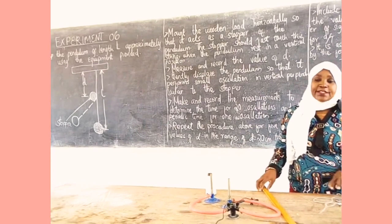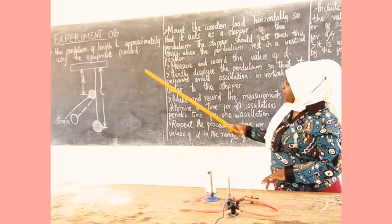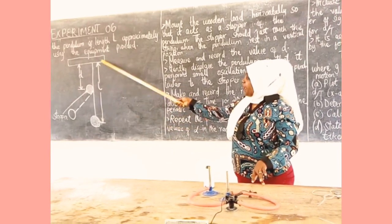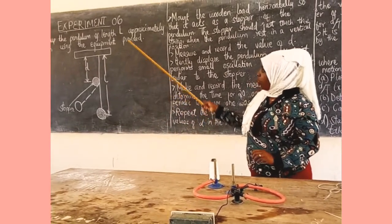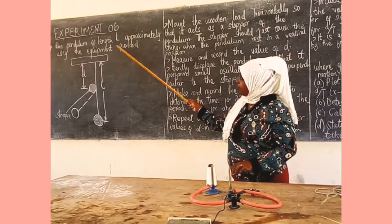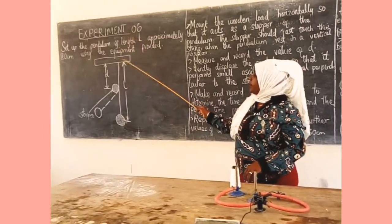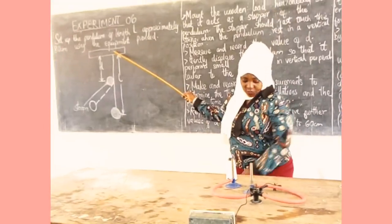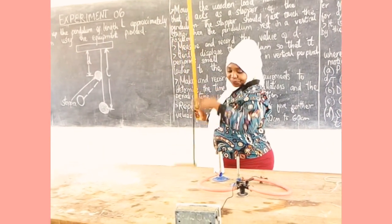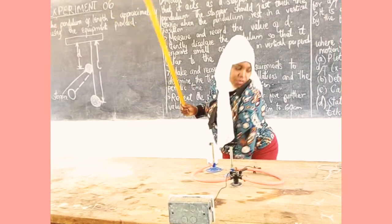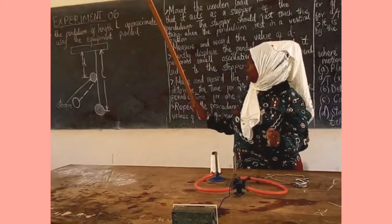This is the Galileo experiment. The setup of the experiment is shown in the figure below. We are provided with a string with length L, with a retort stand together with a stopwatch and a pendulum and a metal.